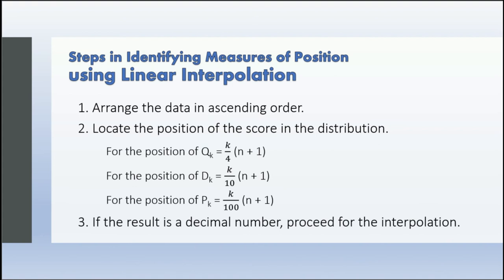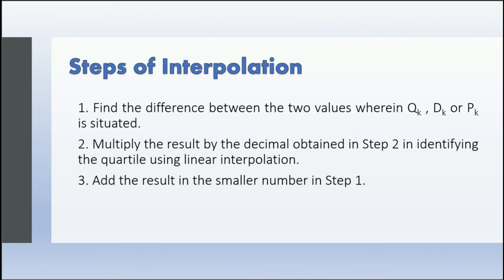The steps of interpolation are: Step 1 — find the difference between the two values where Q sub k, D sub k, or P sub k is situated. Step 2 — multiply the result by the decimal portion obtained in step 2. Step 3 — add the result to the smaller number from step 1.